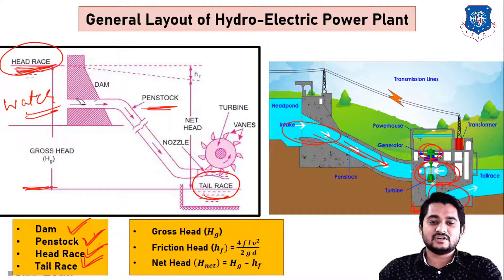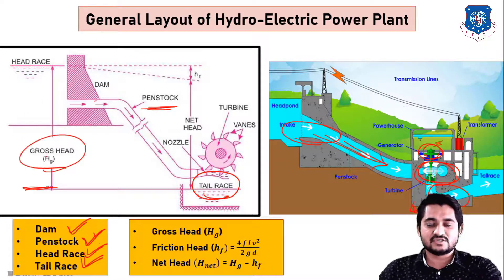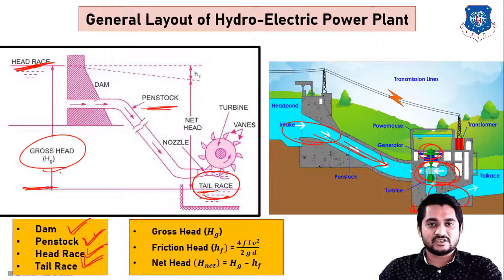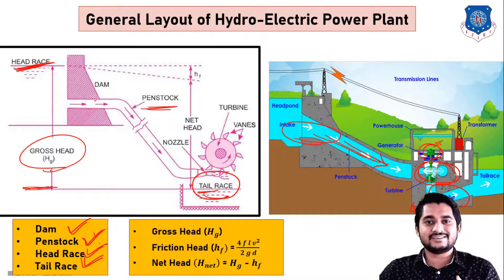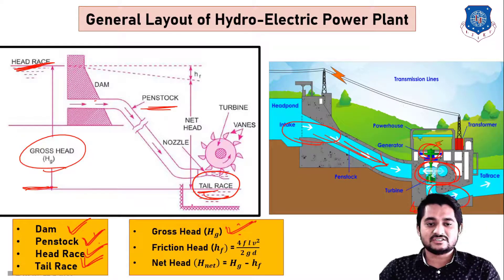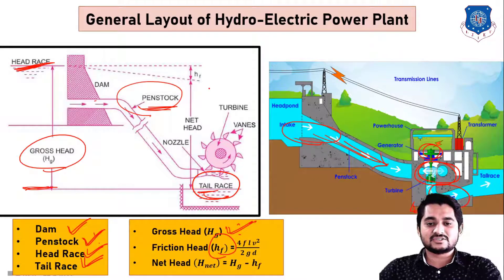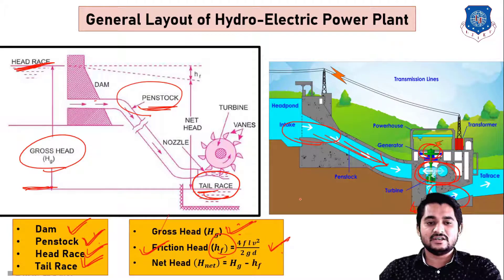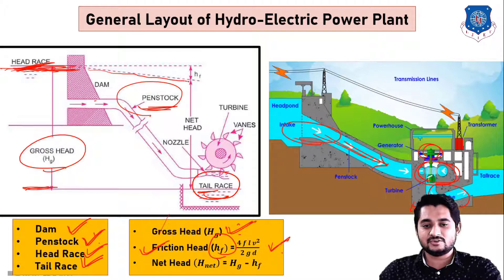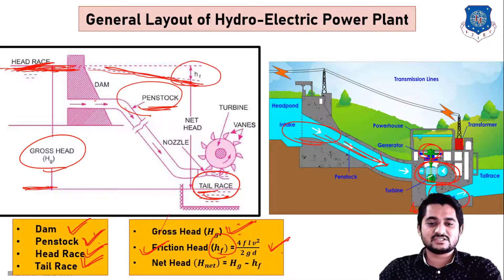Gross head is the difference between head race and tail race when the water is in a steady condition — remember, steady condition is the key word for gross head. Friction head refers to losses due to friction when water flows through the penstock; the equation is HF = 4FLV² / 2GD. As shown in the sketch, when water flows through the pipe some head is reduced due to these friction losses.